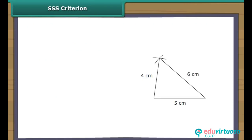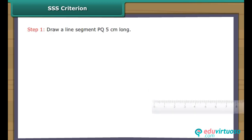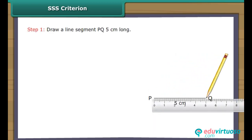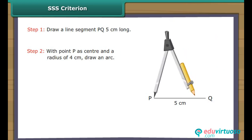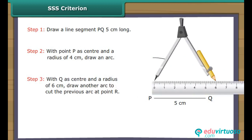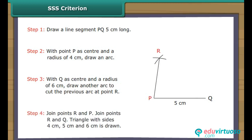SSS Criterion: Let us draw a triangle whose three sides measure 4 cm, 5 cm and 6 cm with the help of a ruler and a compass. Draw a line segment PQ 5 cm long. With point P as center and a radius of 4 cm, draw an arc. With Q as center and a radius of 6 cm, draw another arc to cut the previous arc at point R. Join points R and P, then join points R and Q. Triangle with sides 4 cm, 5 cm and 6 cm is drawn.